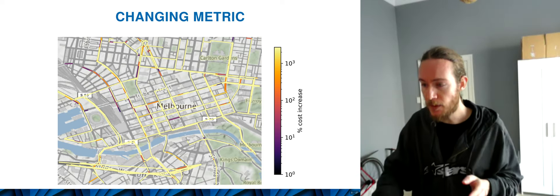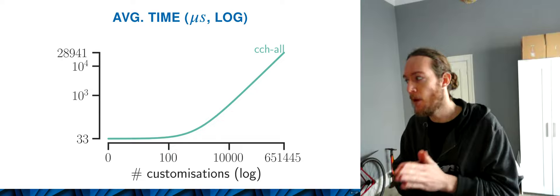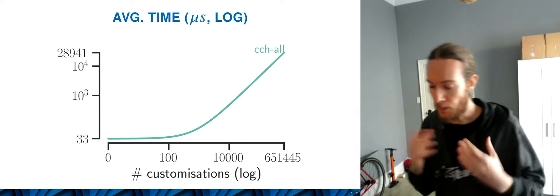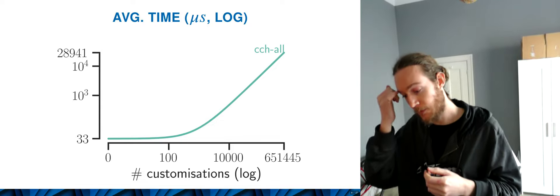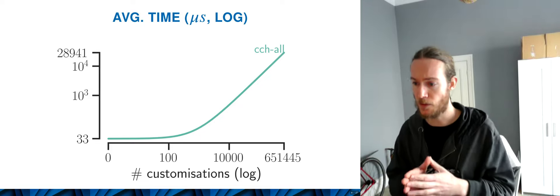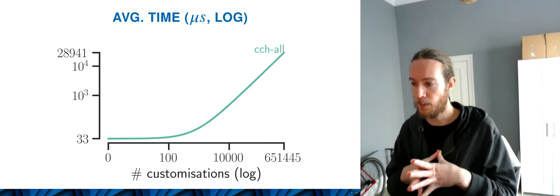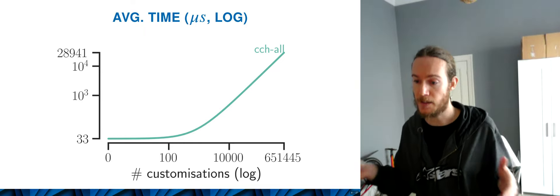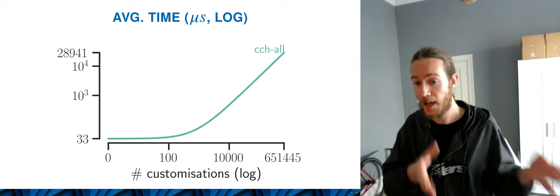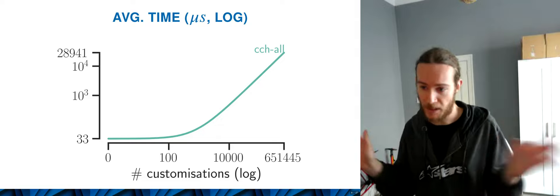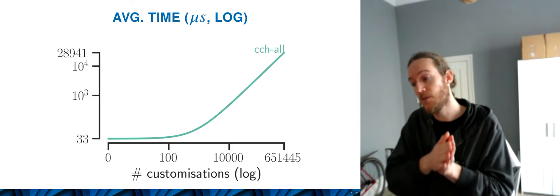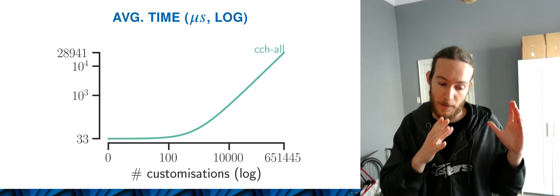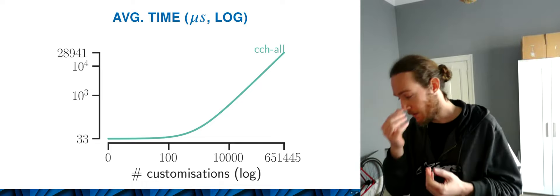Our focus is the changing metric, but not only do we want the metric to change through time, we want to be able to customize that metric per query. That's why we want to avoid repairs. Here is a plot using the state-of-the-art in repairable search algorithms, which is customizable contraction hierarchies (CCH). We're measuring the average time per query in microseconds on the y-axis, depending on the number of customizations needed on the x-axis. At zero customizations, we start with a contraction hierarchy and route everything — it works really well at about 33 microseconds. As we start needing customization, the cost increases, and having to pay the cost of repairing the contraction hierarchy all the time starts to take a toll.